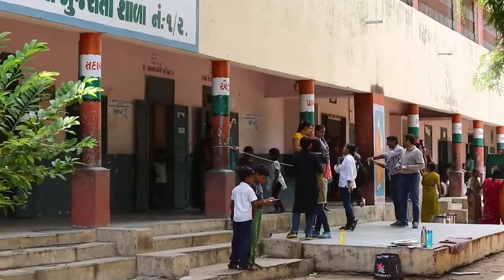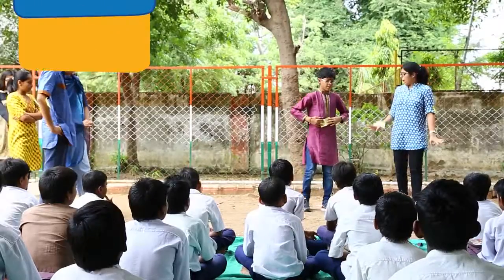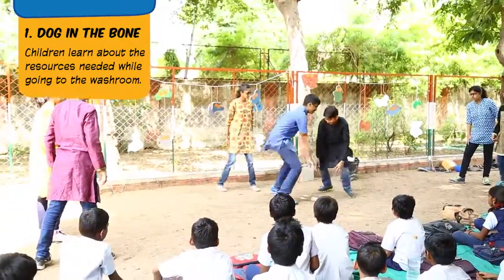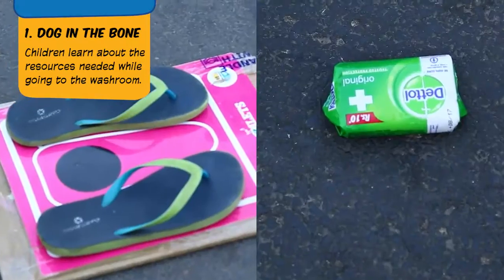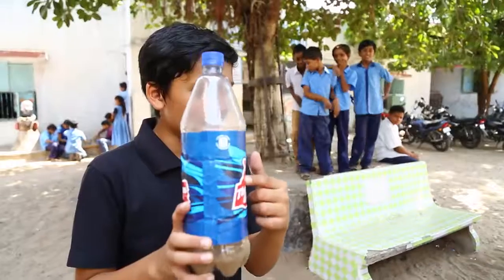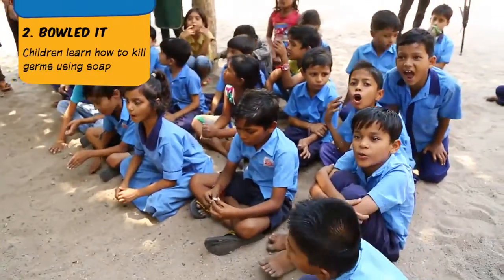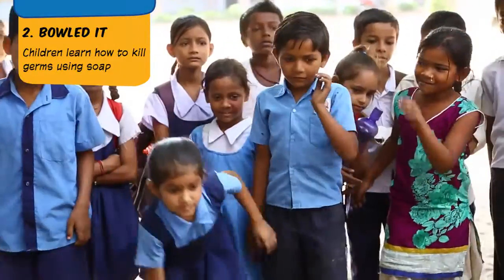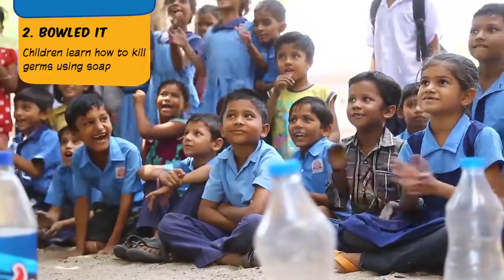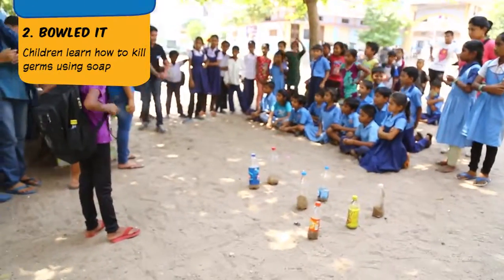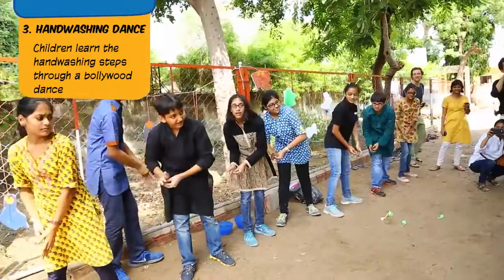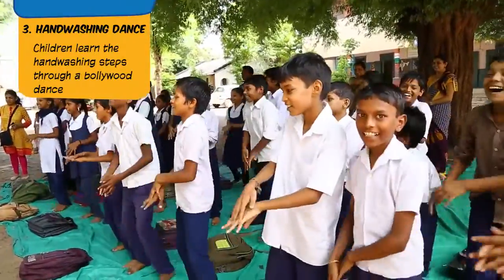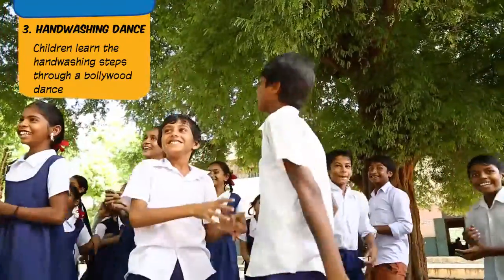To accomplish our goal of making sanitation a priority for children, we had a visit to Amyapur, where we went to a government school. We came up with three games: Dog and the Bone, in which children learned the resources needed while going to the washroom; Moldy, in which they learned how to kill germs using soap; and a Bollywood dance, in which they learned the handwashing steps in a dance form.